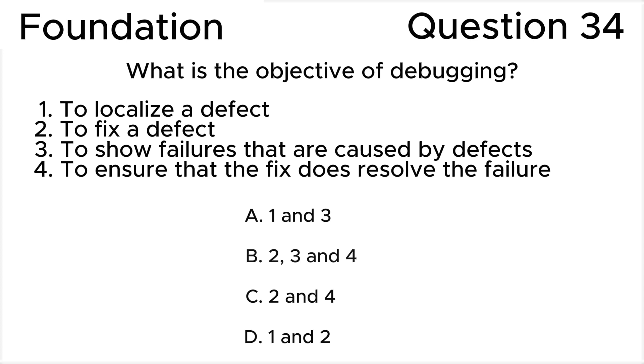What is the objective of debugging? 1. To localize a defect. 2. To fix a defect. 3. To show failures that are caused by defects. 4. To ensure that the fix does resolve the failure.